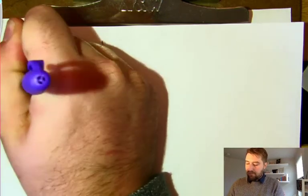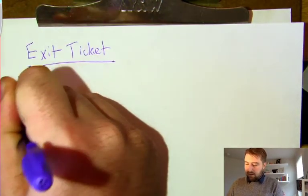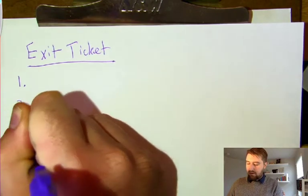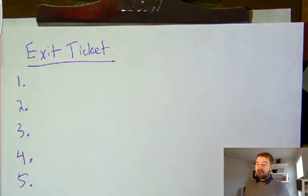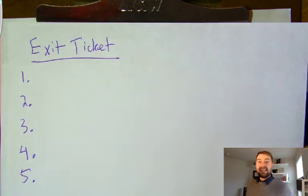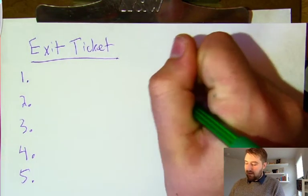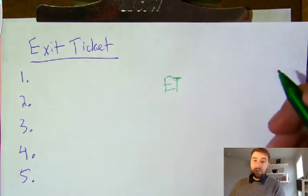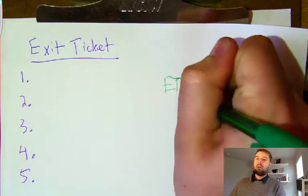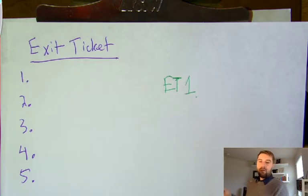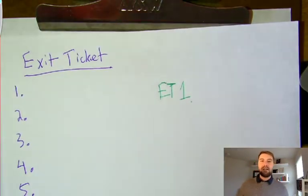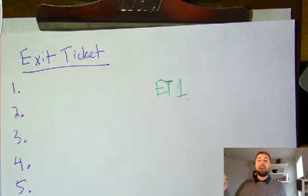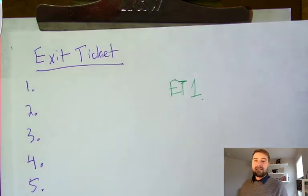Number one, two, three, four, and five. As we work through the video today, I will be giving you some practice problems—I'll say 'this is exit ticket problem one' or 'exit ticket problem two.' I will also label them as ET1, ET2, ET3, 4, or 5. Make sure you've got your piece of paper ready with your five exit ticket problem solutions, and let's go.